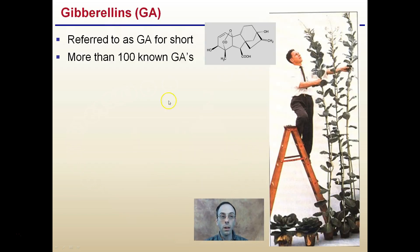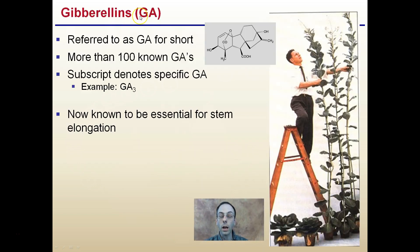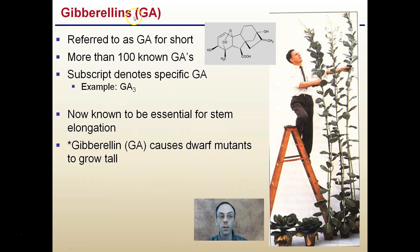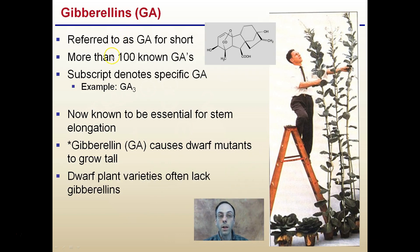Gibberellins are abbreviated as GAs. There are actually more than a hundred known GAs. The subscript denotes the specific GA, so this would be an example of GA3. Remember, subscript is located below.